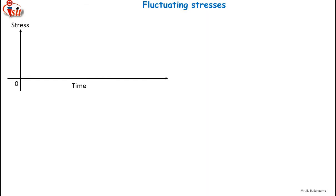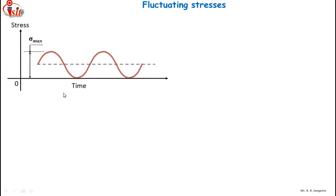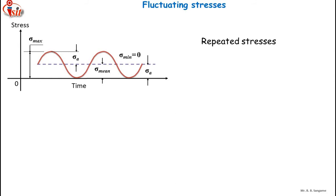For repeated stresses, the stress also varies in a sinusoidal manner with respect to time, but the variation is from zero to some maximum value. Plotting time on the x-axis and stress on the y-axis, the top of the sinusoidal curve represents the maximum stress, the stress amplitude is shown, the minimum stress is zero, and the mean stress is the average of maximum plus minimum stress divided by two.